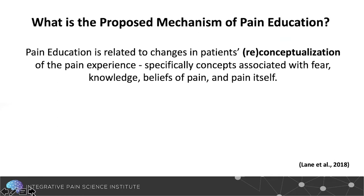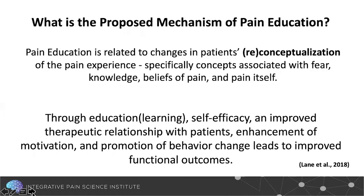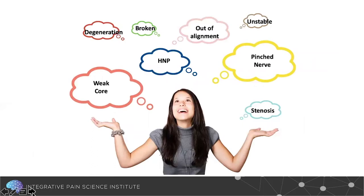The proposed mechanisms of change for pain education involve reconceptualization around fear, fear avoidance, knowledge and beliefs about pain, and pain itself. With pain education, we hope to impart new learning, which changes self-efficacy, improves the therapeutic relationship, enhances motivation, and — most importantly — promotes behavior change leading to improved functional outcomes. Both traditional CBT and pain education ultimately have to do with changing or modifying thoughts and beliefs.